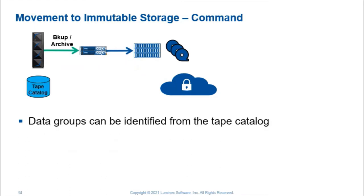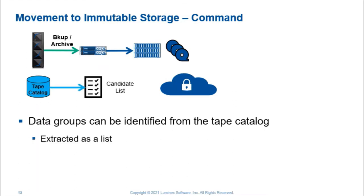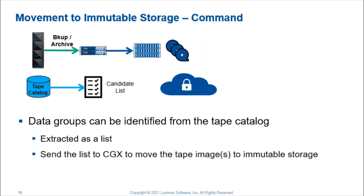Alternatively, data groups can be identified from the tape catalog, extracted as a list, and the list sent to the channel gateways to move the tape image or set of tape images to immutable storage.